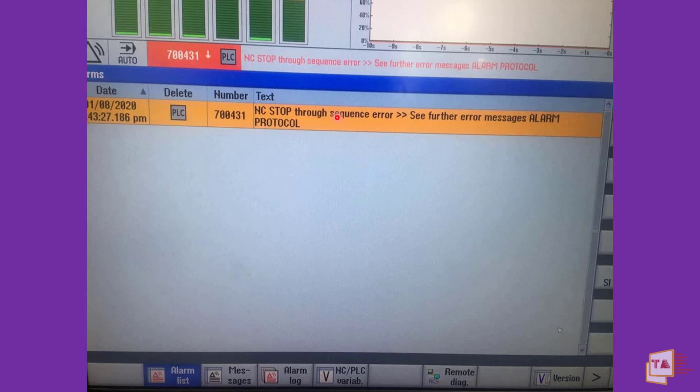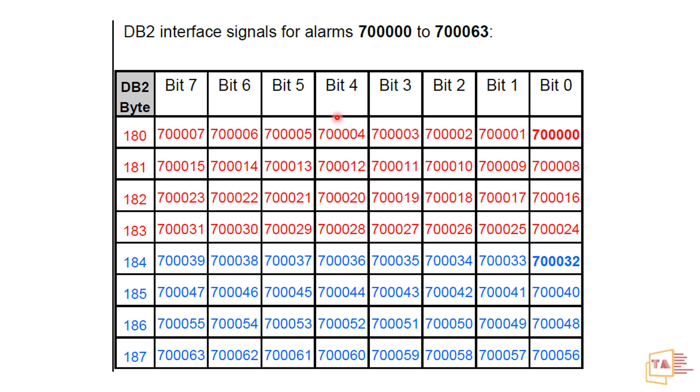So what is the best way or simple way or coolest way to find out the exact bit of the exact alarm which is made by the PLC? Let me explain. So this one is DB2. DB2 interface signals for alarm for PLC that's made by the user. Alarms is starting from the 180 DB2.